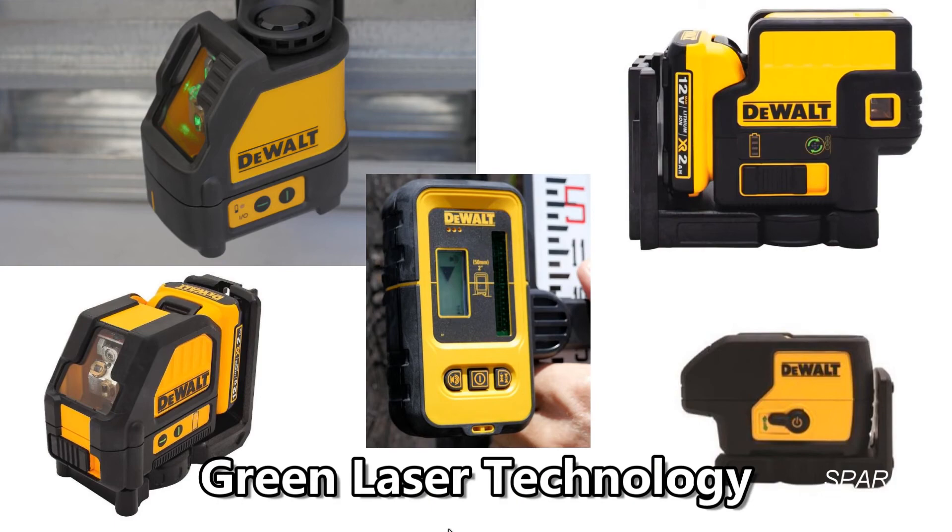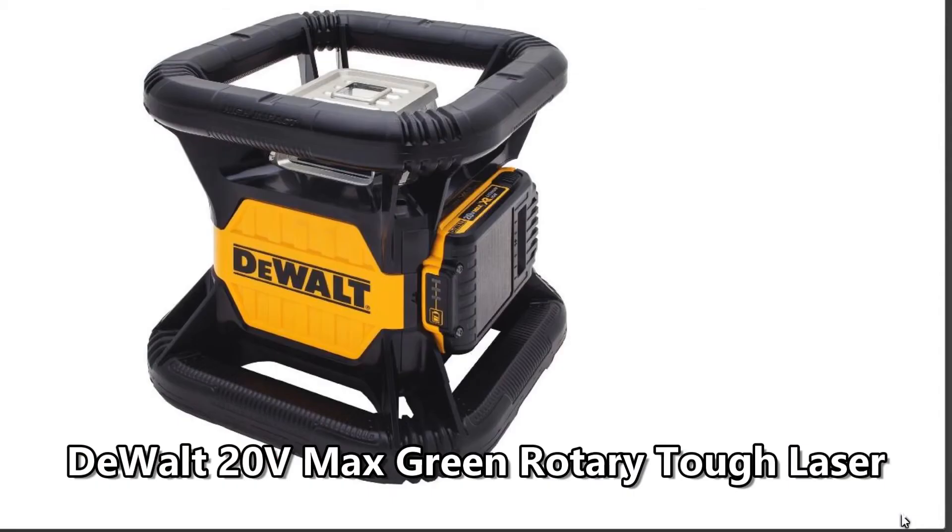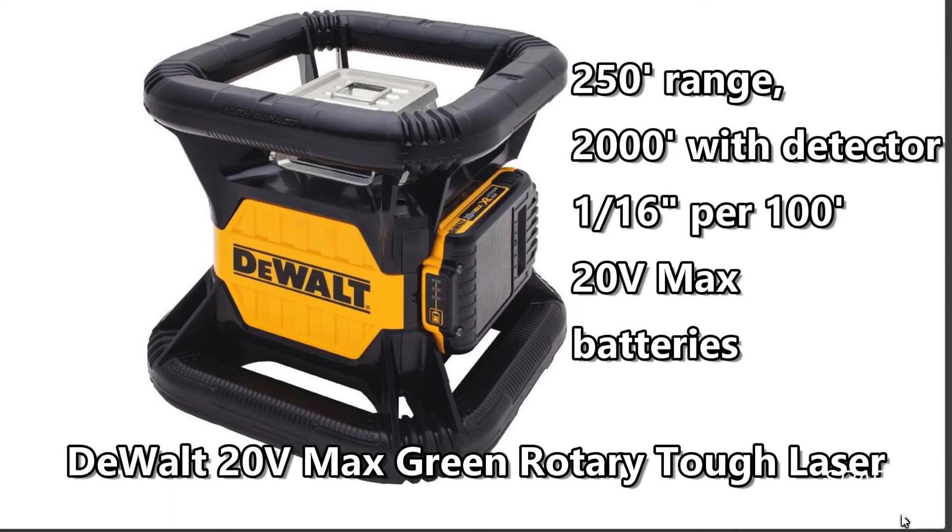Last but not least, I'll put a link for the big daddy of the Dewalt green laser family, the Dewalt 20 volt max green rotary tough laser. It has a 2000 foot range with the detector and a 250 foot range without the detector. It has a one-sixteenth inch accuracy rating over 100 feet and it runs on Dewalt 20 volt max batteries.